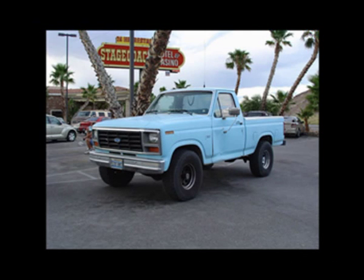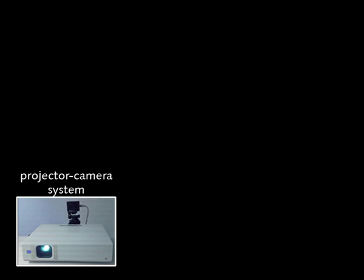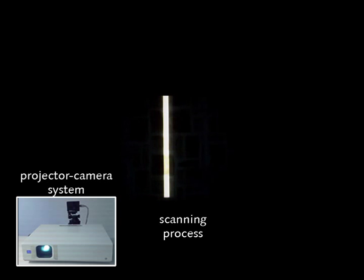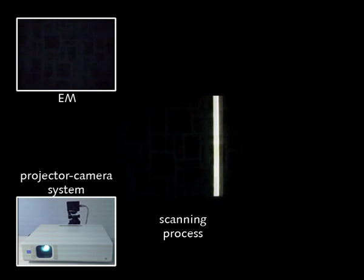Normally, video projectors are used for presenting images onto white canvases. If instead an image is projected onto a coloured surface, the projected colours are modulated by the pigments of the underlying surface. Using a projector-camera system in combination with structured light techniques, information about the surface can be acquired.